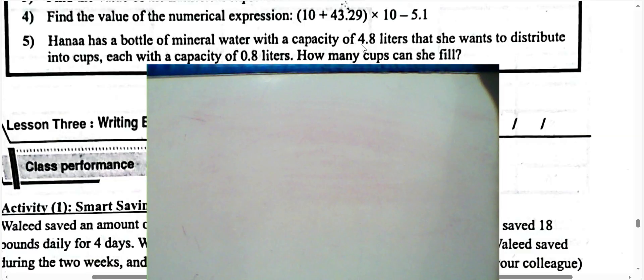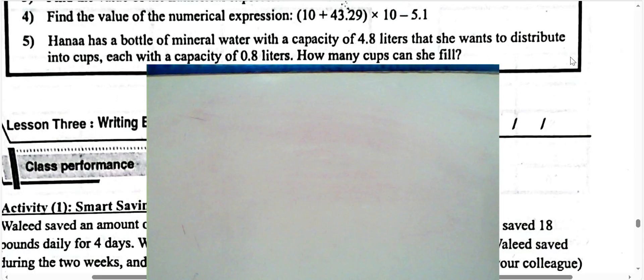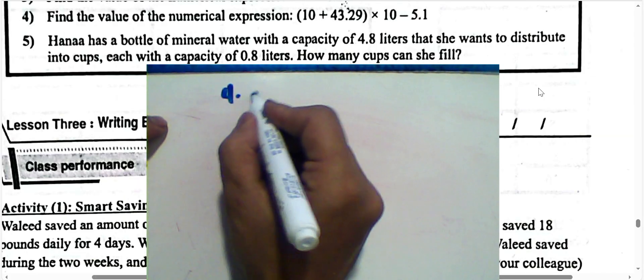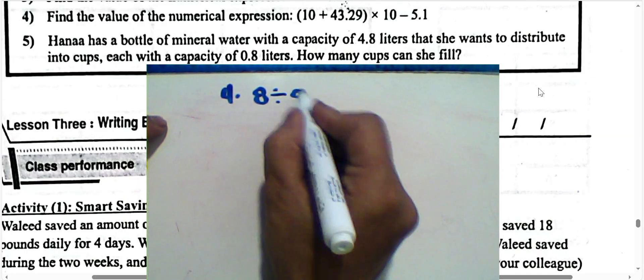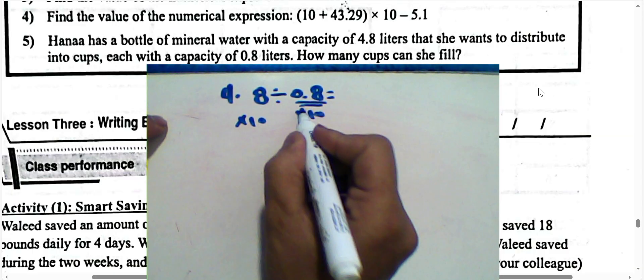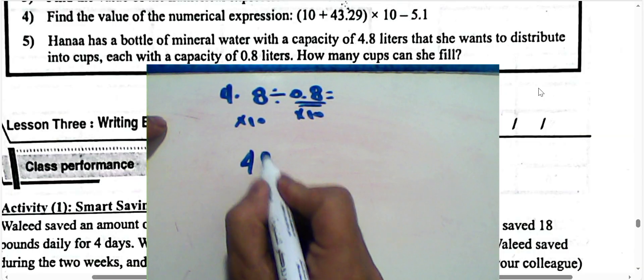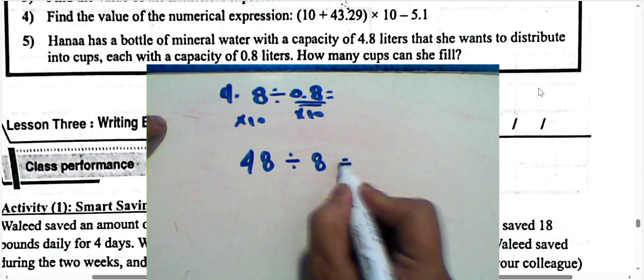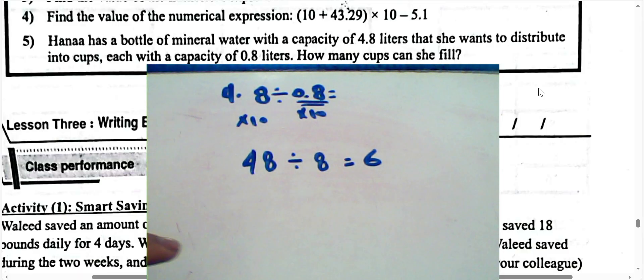Next question number 5: Hannah has a bottle of mineral water with a capacity of 4.8 liters that she wants to distribute into cups with a capacity of 0.8 liters each. How many cups can she fill? We find 4.8 divided by 0.8. Multiply by 10 to convert the decimal divisor: 48 divided by 8. The result is 6, so the number of cups is 6.